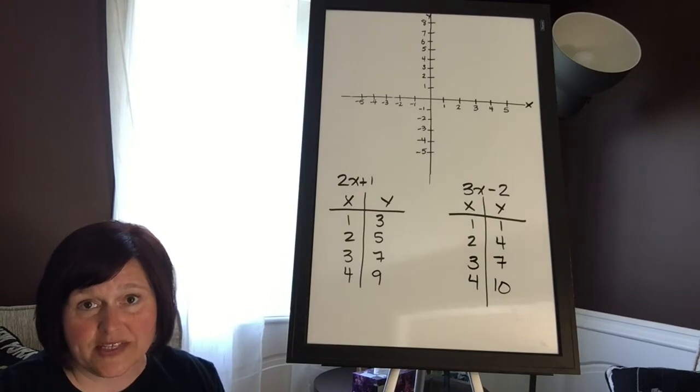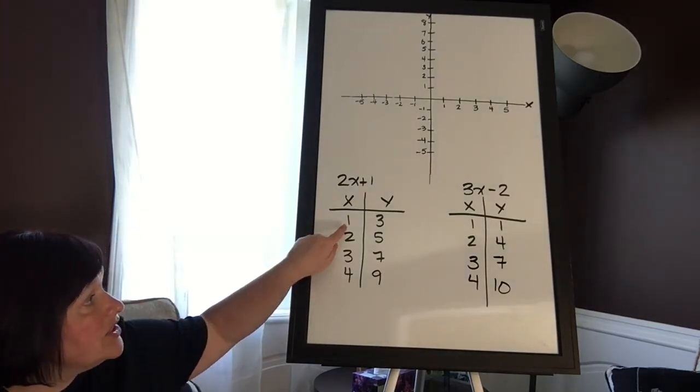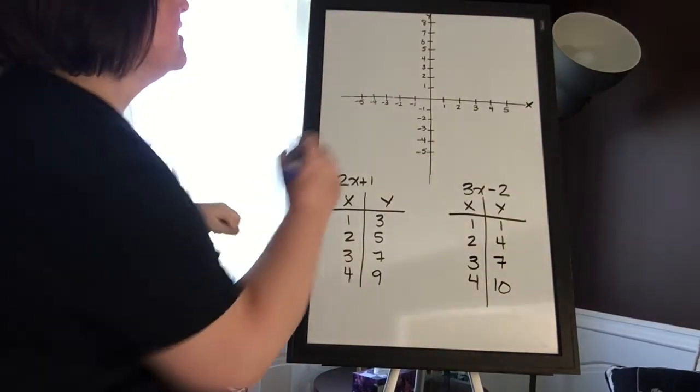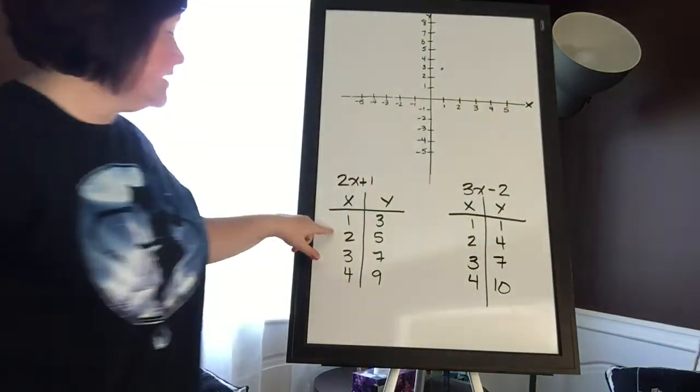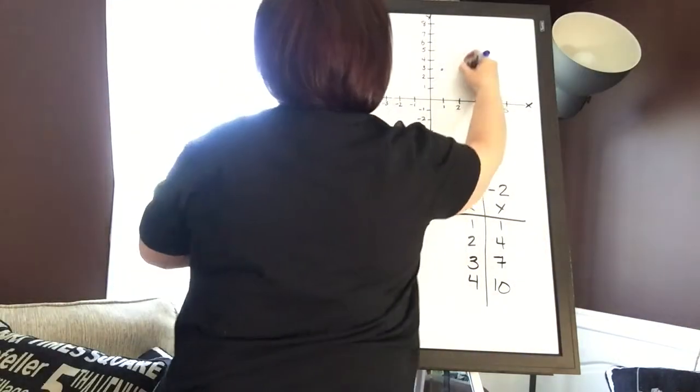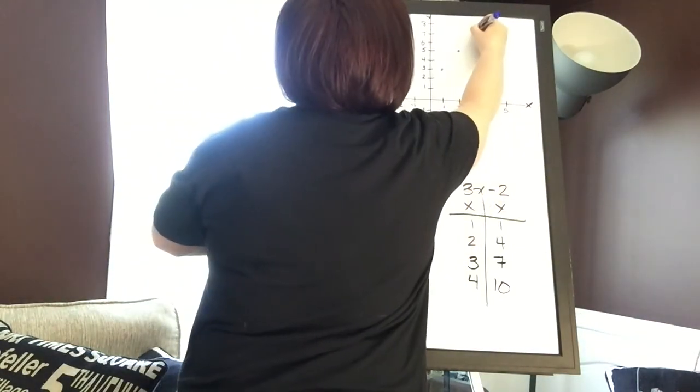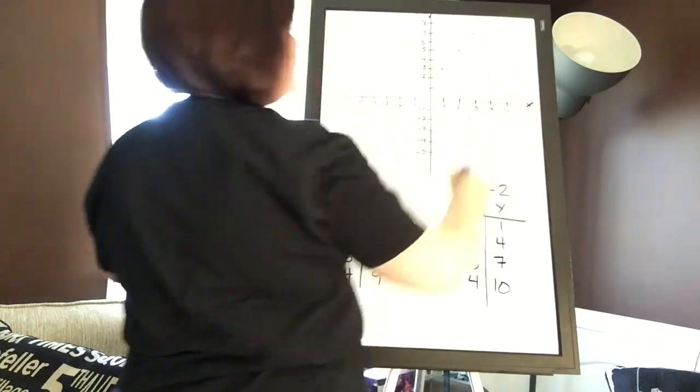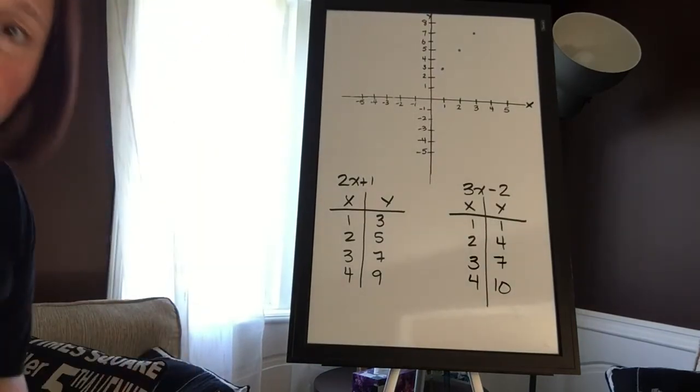Now you know on a graph you always, always, always read x first. And so the way that I plot these is simply looking at the coordinate pair one, three, and then I plot it. One, three. And then I look at two, five. Three, seven.